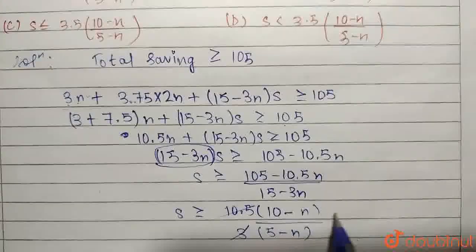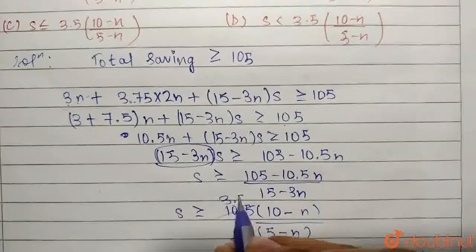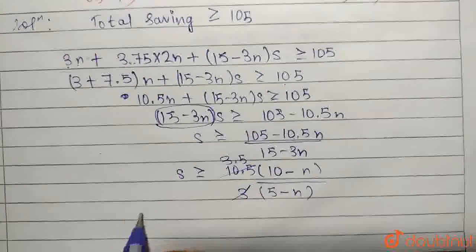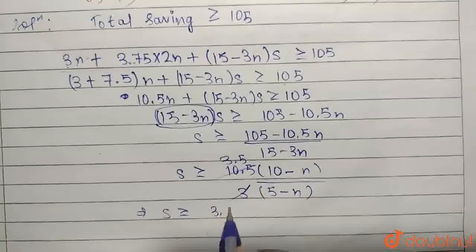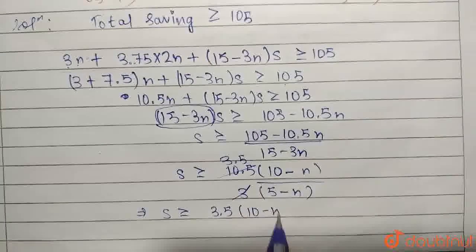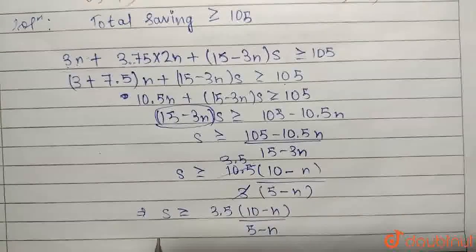It gets cancelled here, it will be 3.5, which gives me my final expression that is S should be greater than or equal to 3.5 into 10 minus N divided by 5 minus N.